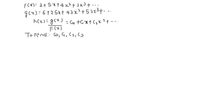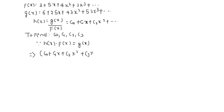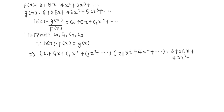Since h(x) = g(x)/f(x), we have h(x)·f(x) = g(x). So (c₀ + c₁x + c₂x² + c₃x³ + …) multiplied with (2 + 5x + 4x² + …) equals g(x), which is 6 + 25x + 43x² + 52x³ + ... We multiply and then compare the terms.